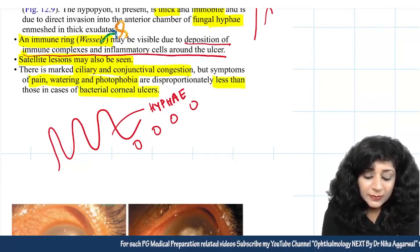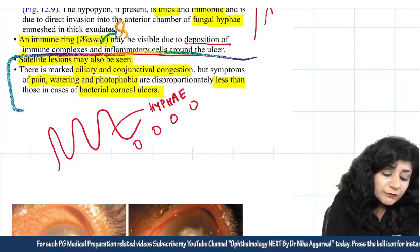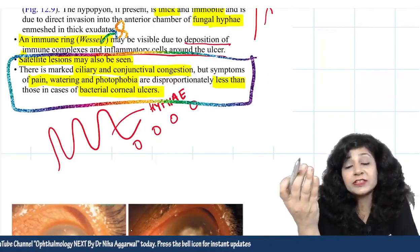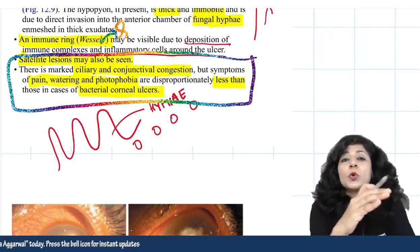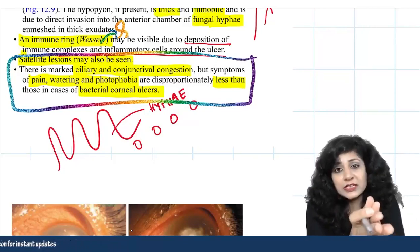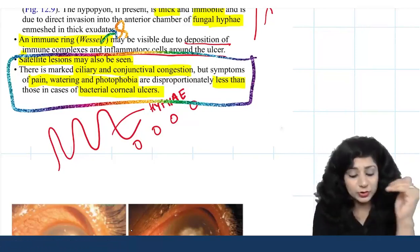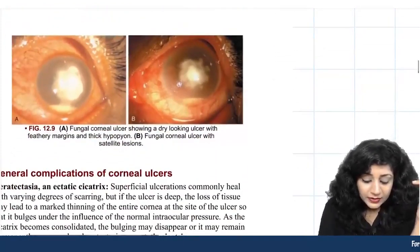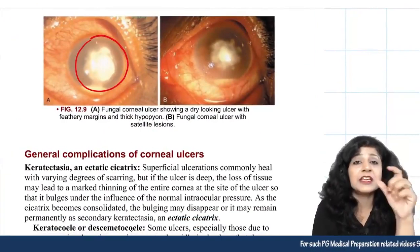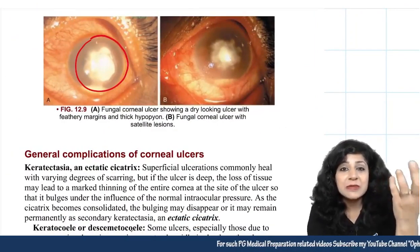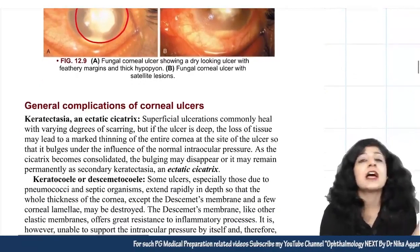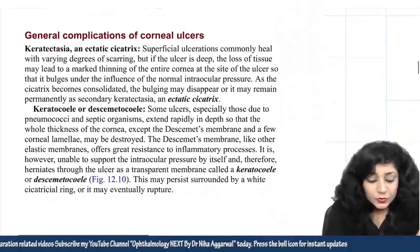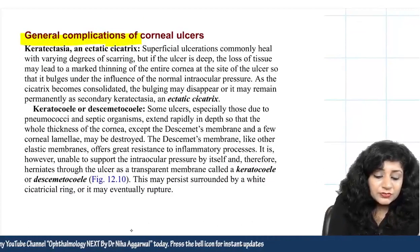Ciliary congestion, pain, watering, and photophobia are less severe than in bacterial corneal ulcer. However, symptoms are not entirely absent — if symptoms are present, fungal keratitis cannot be excluded; always look for the other important signs. An image of a fungal ulcer shows a dry, grayish, creamy exudate with a large, non-sterile, non-mobile hypopion and multiple satellite lesions.